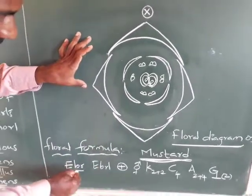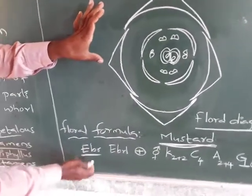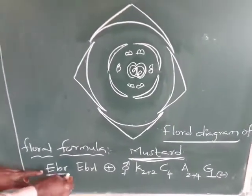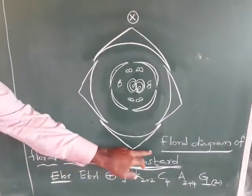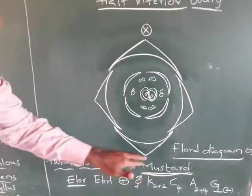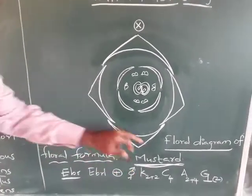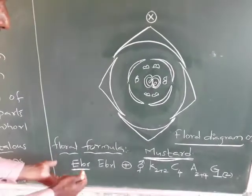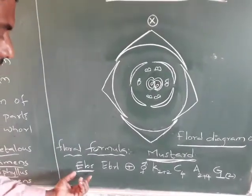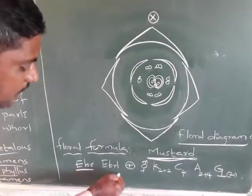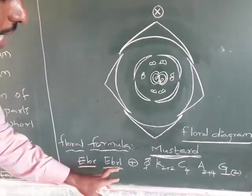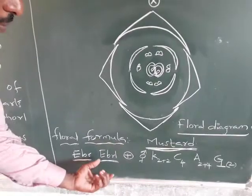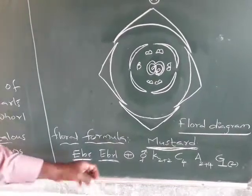In the mustard floral formula, EBr indicates ebracteate — absence of bracteate, meaning this flower does not have bracteate. EBr also indicates that the bracteoles are also absent here.